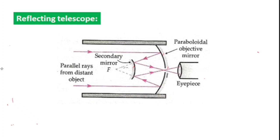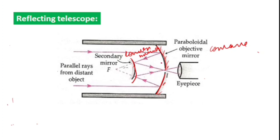The reflecting telescope has advantages over the astronomical telescope: it is free from spherical and chromatic aberration, its size is smaller, it is easy to handle, and it is cheaper. The objective lens is replaced by a large parabolic concave mirror and a secondary convex mirror. Parallel rays from distant objects fall on the parabolic concave mirror, are reflected onto the secondary convex mirror, reflected back, and enter the eyepiece to form the final image.